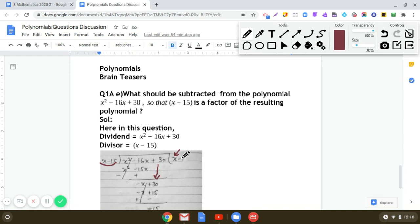Now the next term in the quotient will be -1. So we have -x + 15. Now change the signs. So -x + x gets cancelled and 30 - 15 will give us 15.